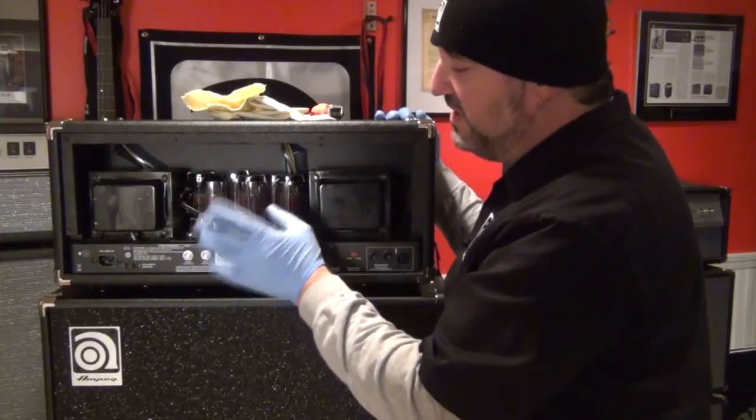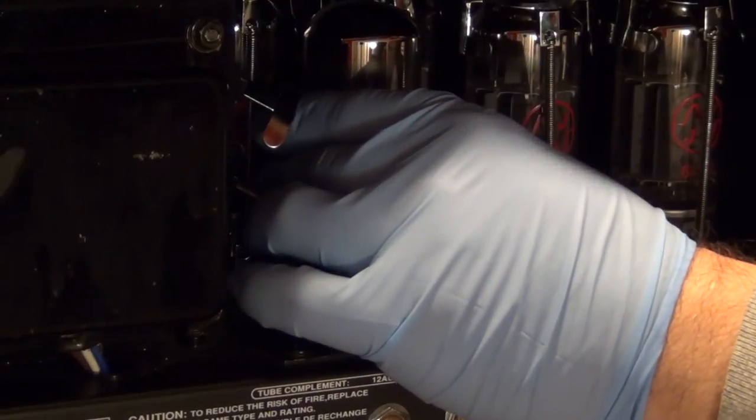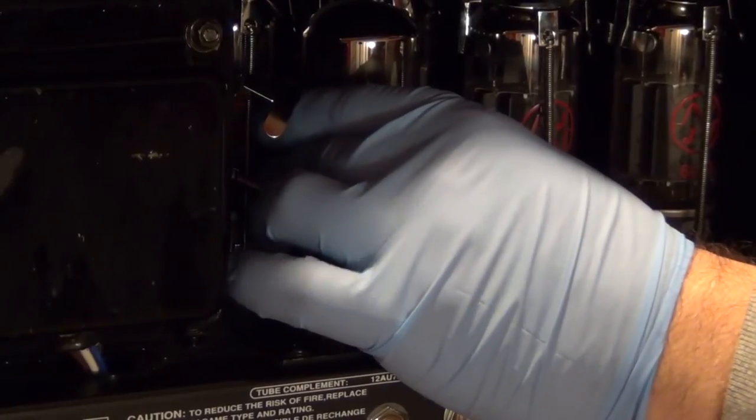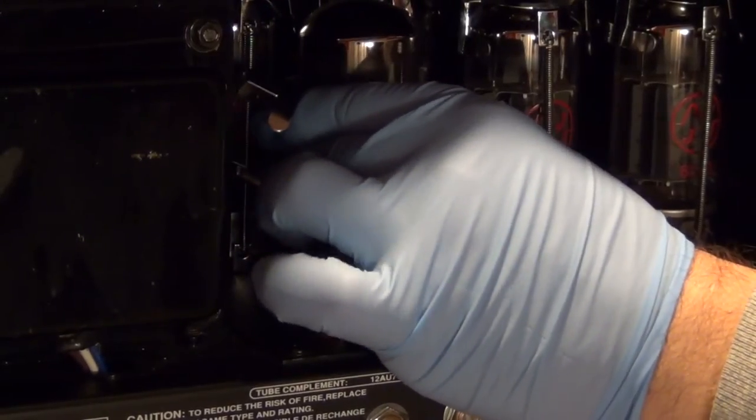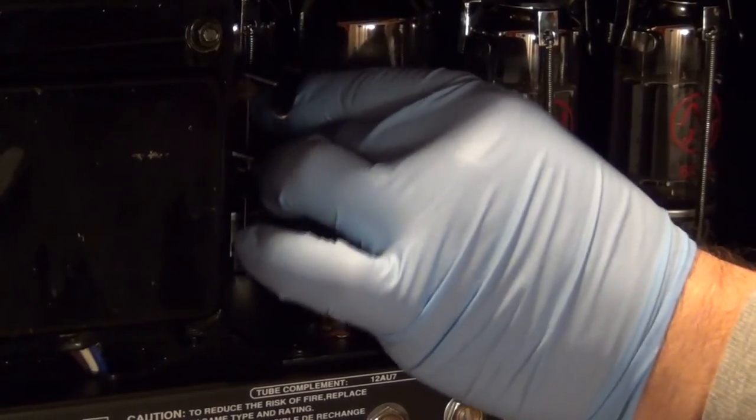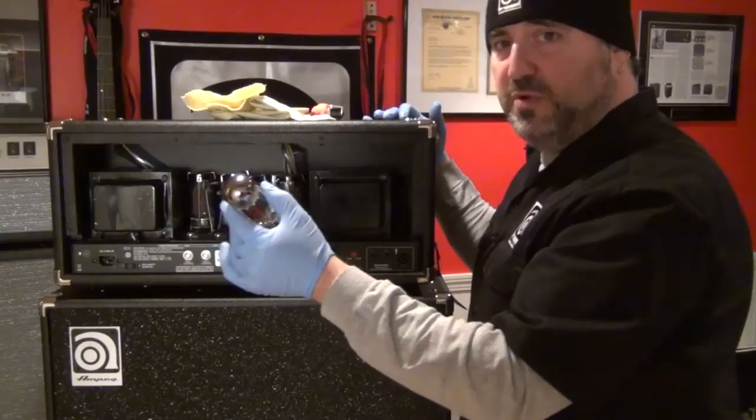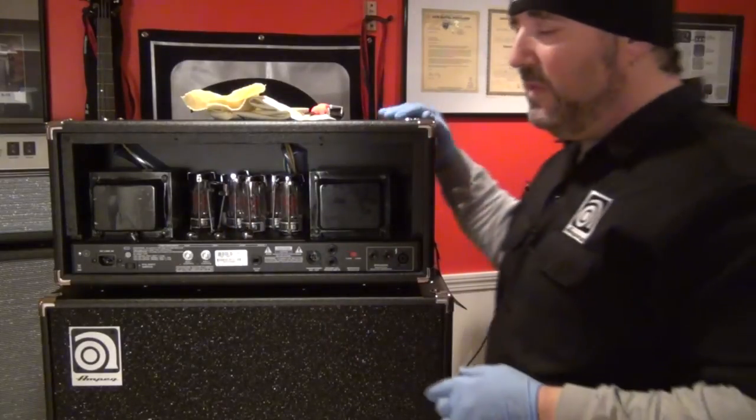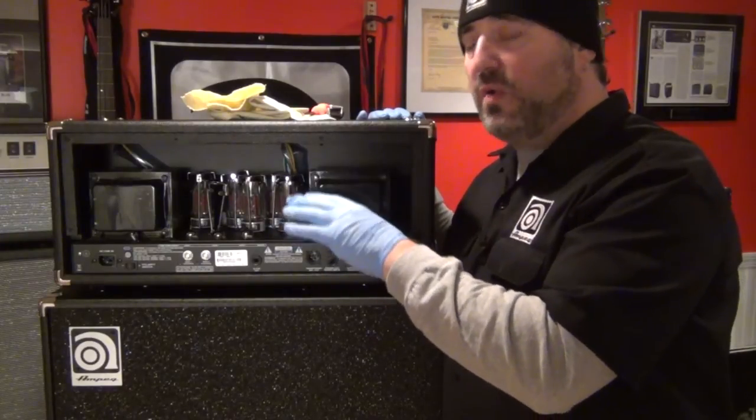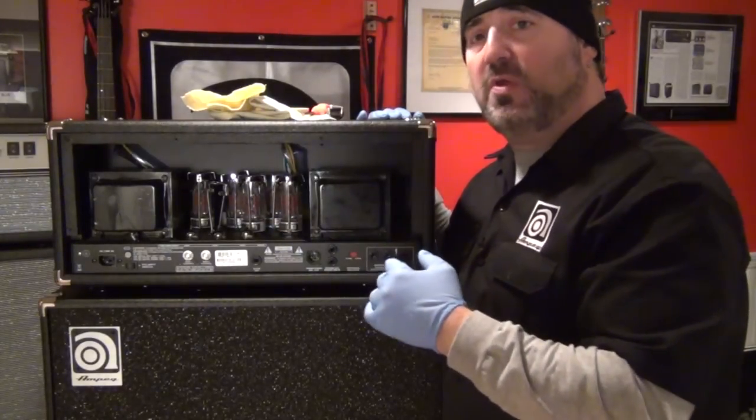Then we want to just really easily wiggle the tube out of the socket. We don't want to wrench it too hard or force it because we might break a solder trace on the board below. So you just want to very gently wiggle it out like so until it releases and then just put the tube aside. We're going to do this for all six tubes. Now you might want to make a note of the location of each tube that you pull out.